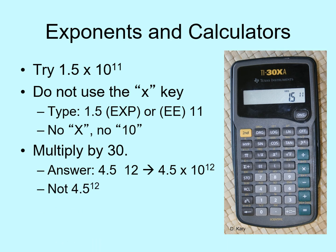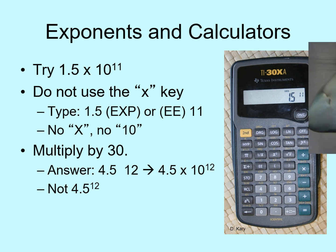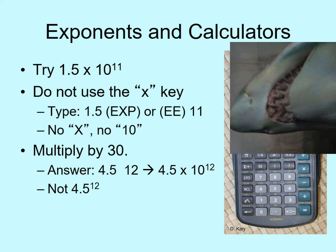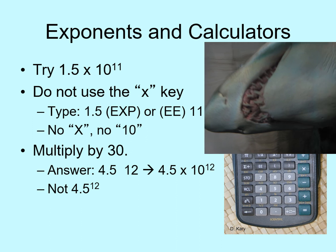Also, when you do have the right answer, don't write it out as 4.5 to the 12th power — that means something completely different and it will be marked wrong. Bruce is popping in to remind us that not entering exponents into the calculator properly and writing down the answer incorrectly are two of the most common mistakes students make with the math, so be sure you can do this right.